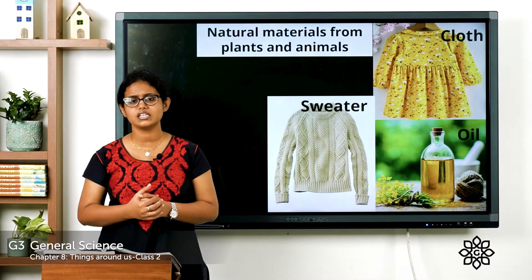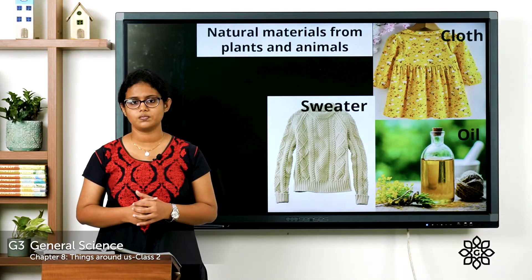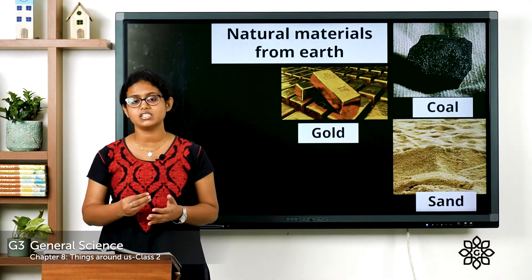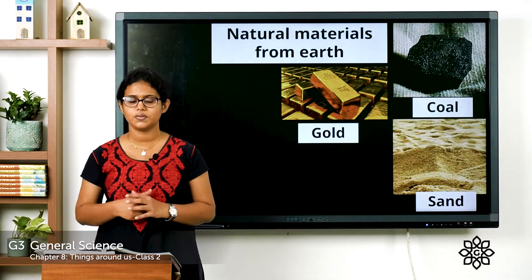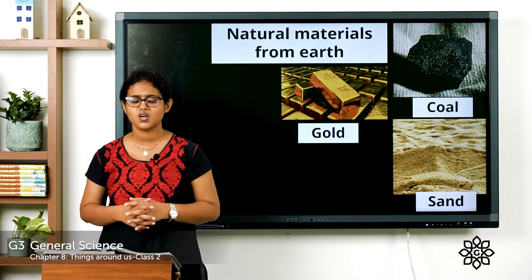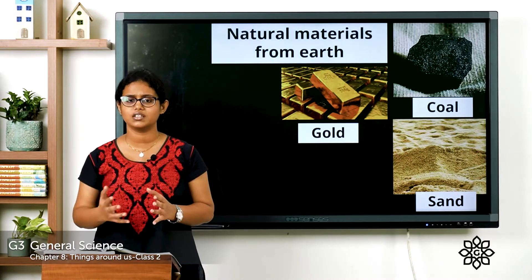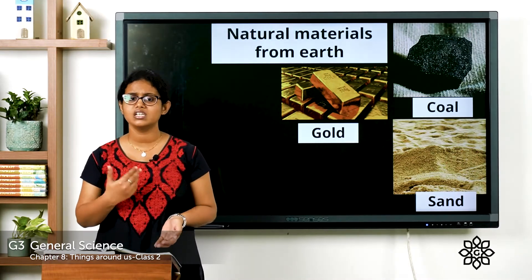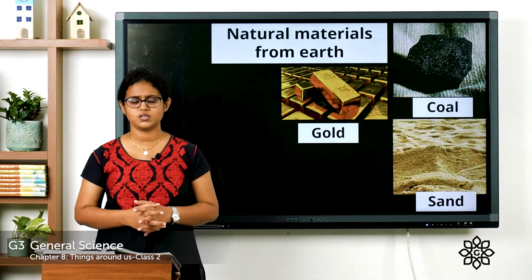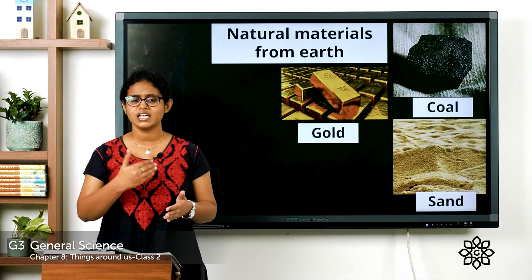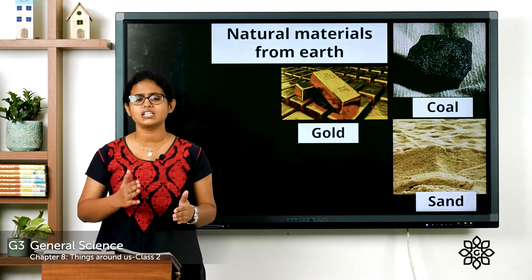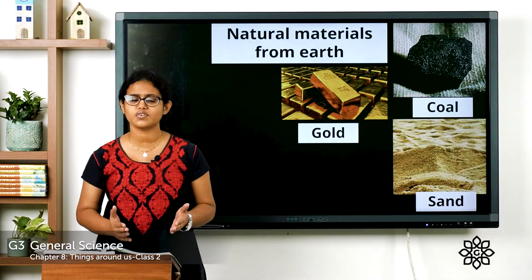We also get oil from sunflower seeds. Natural materials are also obtained from the earth — like coal, crude oil, sand, and rocks. Metals like gold, silver, and copper are also obtained from earth. So natural materials are found in nature, and we obtain them from plants, animals, and the earth.